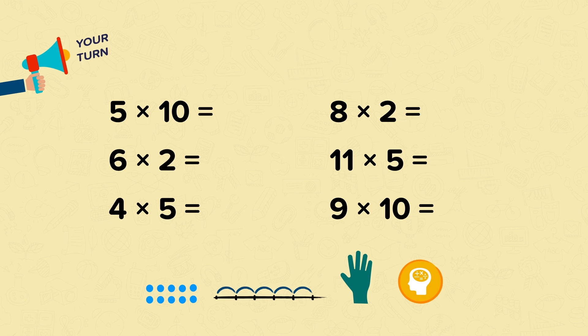Now let's go through the answers. 5 times 10 equals 50. 6 times 2 equals 12. 4 times 5 equals 20. 8 times 2 equals 16. 11 times 5 equals 55. And finally, 9 times 10 equals 90. Well done if you got them all correct.